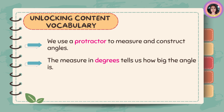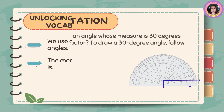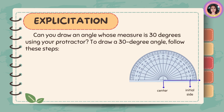The measure in degrees tells us how big the angle is. Can you draw an angle whose measure is 30 degrees using your protractor to draw a 30-degree angle?